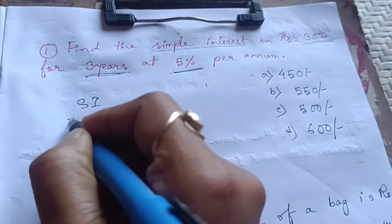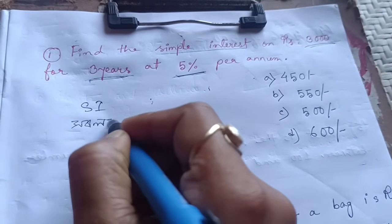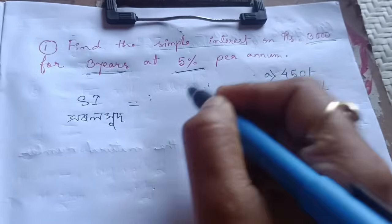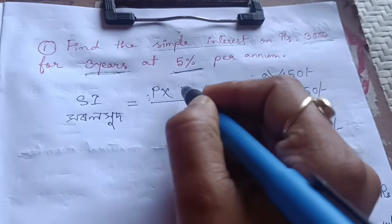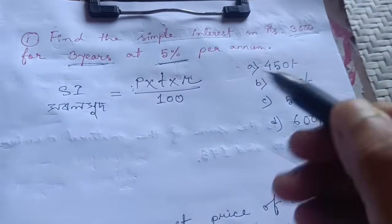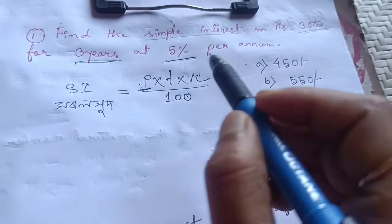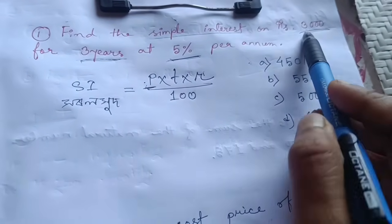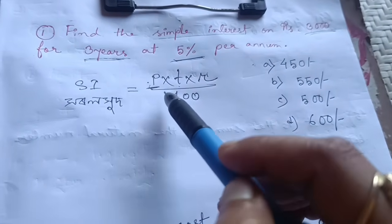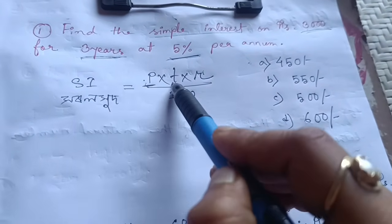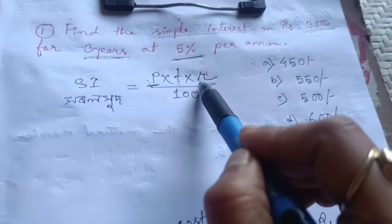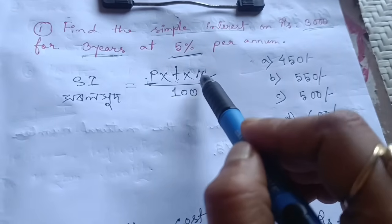For simple interest, the formula is P into T into R divided by 100. P means principal, T means time, R means rate of interest.